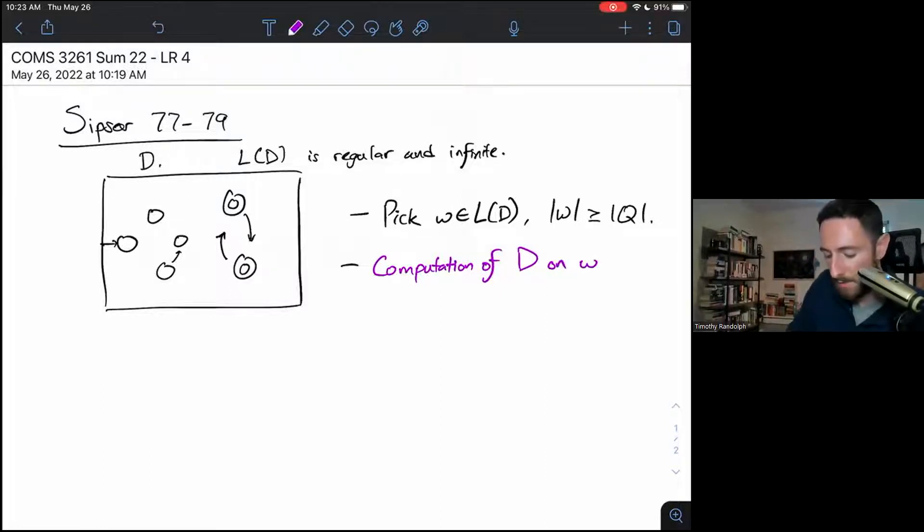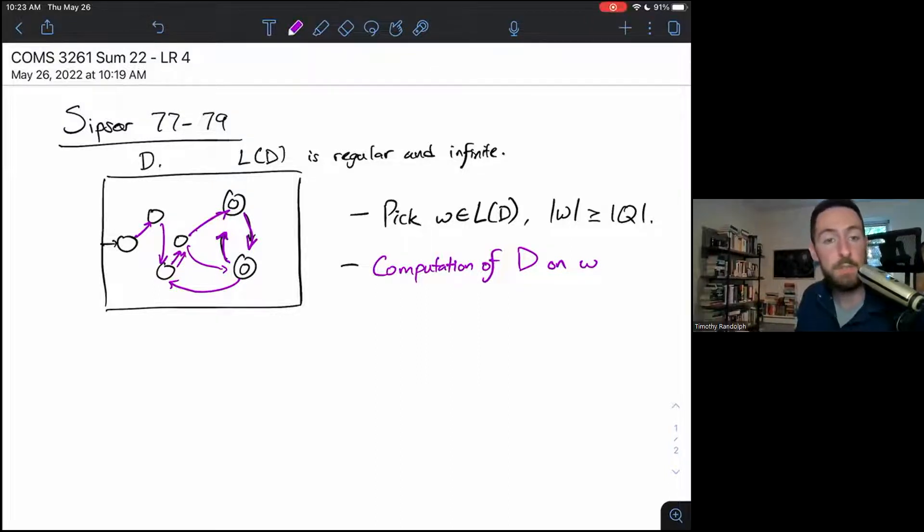So we're going to start at the start state. And as we read in characters of W, we're going to go from state to state, to state, to state. And then, you know, at some point we'll end up at an accept state, because by assumption W is in the language.